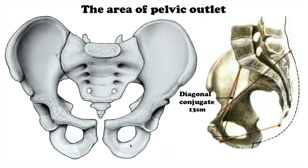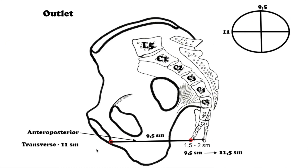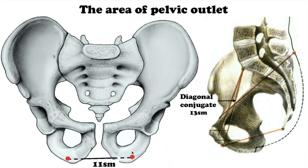The area of pelvic outlet is limited from the front by the inferior margin of the symphysis, from behind by the coccyx, and from the sides by the internal surfaces of the ischial tuberosities. The dimensions are straight and transversal. The straight dimension — the distance from the middle of the inferior margin of the symphysis to the apex of the coccyx — measures 9.5 cm. During delivery, when the fetal head is being born, the coccyx reclines by 1 to 2 cm and the straight dimension increases to 11 cm. The transversal dimension, the distance between the internal surfaces of the ischial tuberosities, measures 11 cm.